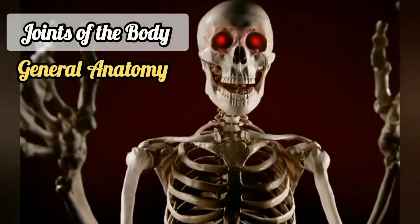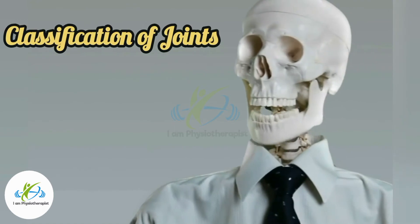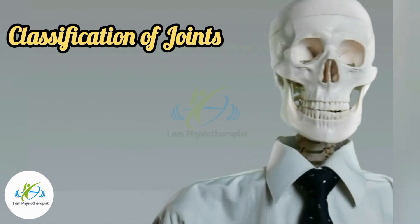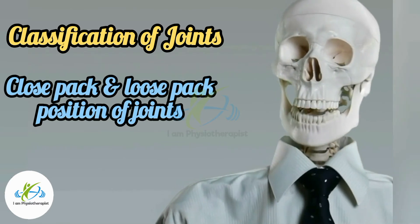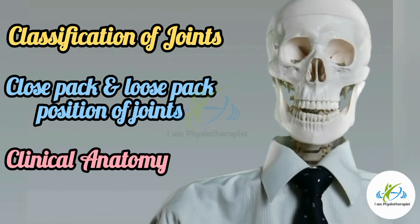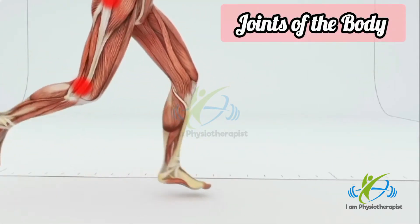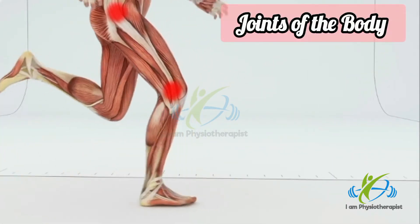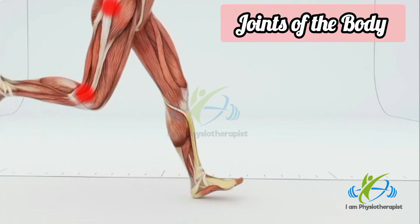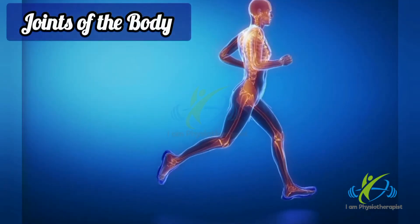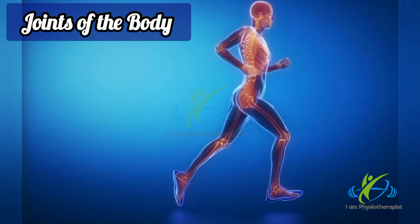Joints of the body. In this video we will discuss functional, regional and structural classification of the joints, close pack and loose pack positions of joints, and clinical anatomy. A joint is a junction between two or more bones or cartilages. It is a device to permit movements. However, some joints are immovable, which are primarily meant for growth and may allow molding during childbirth.